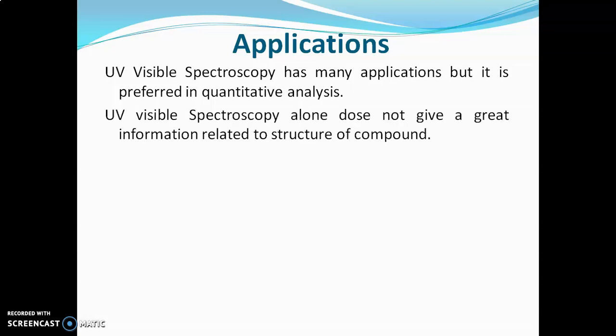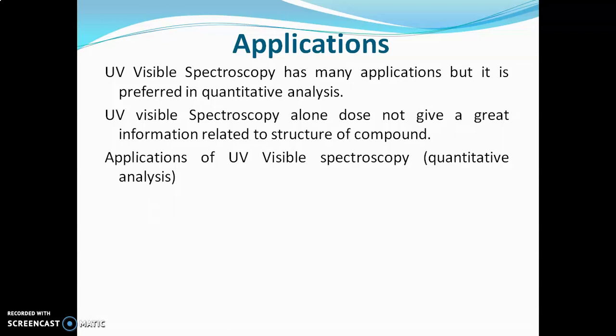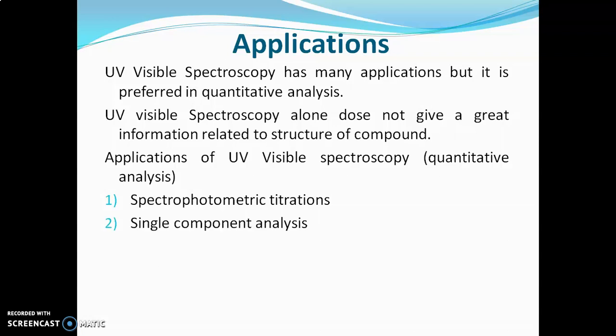UV Visible Spectroscopy alone does not give great information related to the structure and identity of a compound, but when it is combined with IR, NMR, and mass spectroscopy, it will give lots of information. The main applications in quantitative analysis are: spectrophotometric titration, single component analysis, and multi-component analysis.